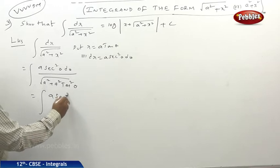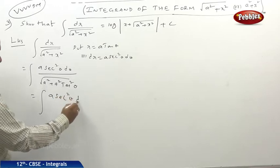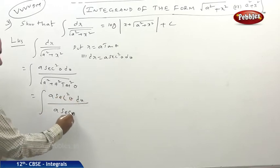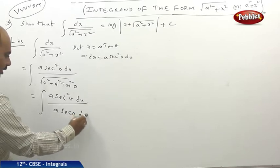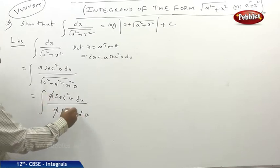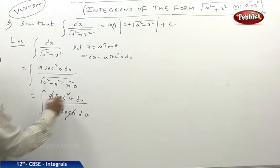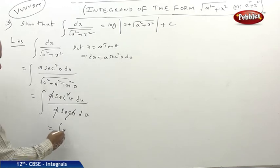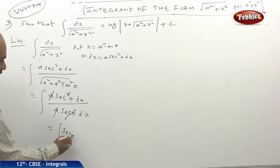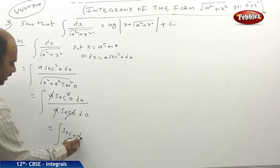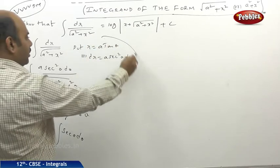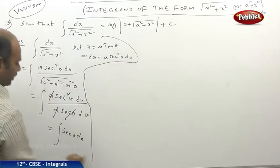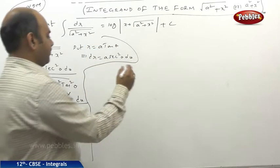So the expression becomes a sec²θ dθ divided by a sec θ dθ. The a's cancel and one sec θ cancels, leaving the integral of sec θ dθ. In the morning class we just explained the integral of sec θ dθ.